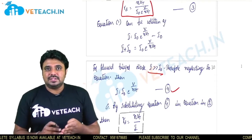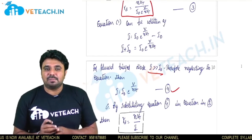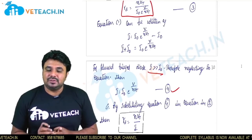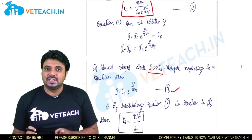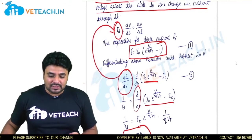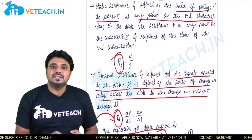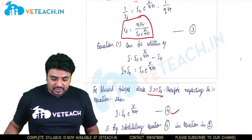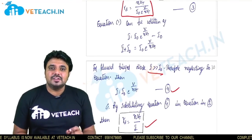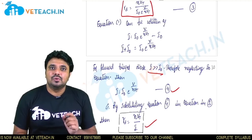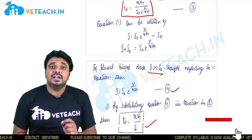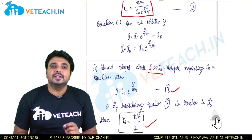In summary, a diode has resistance whenever connected to AC or DC supply. If connected to DC supply, the resistance is DC resistance (static resistance): r_s = V / I — a fixed value depending on applied voltage and current. If connected to AC supply, the resistance is AC resistance (dynamic resistance): r_d = η·Vt / I, where Vt is the thermal voltage and η depends upon the material. Here the voltage used is thermal voltage, not applied voltage, making it easy to remember as resistance equals voltage divided by current in both cases.